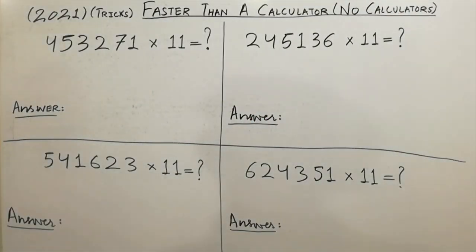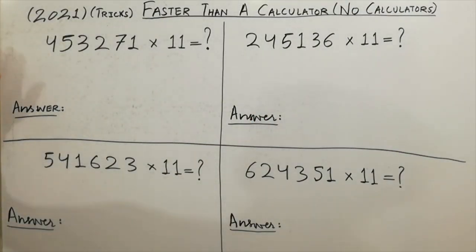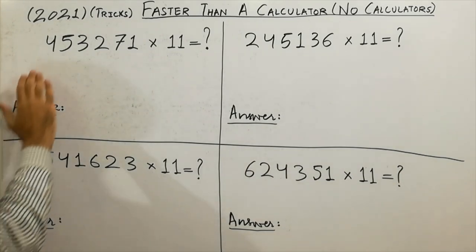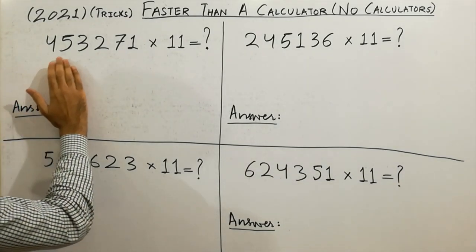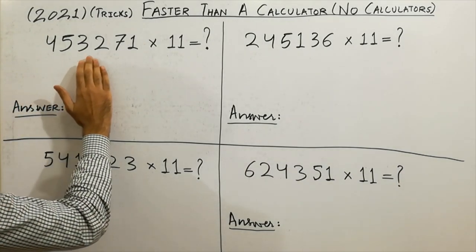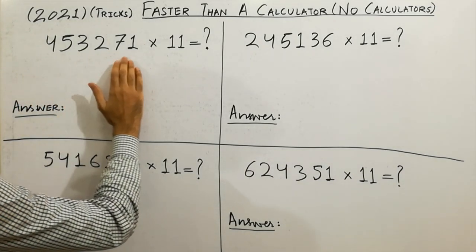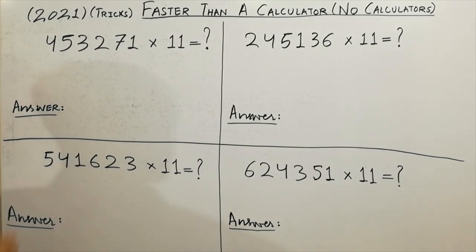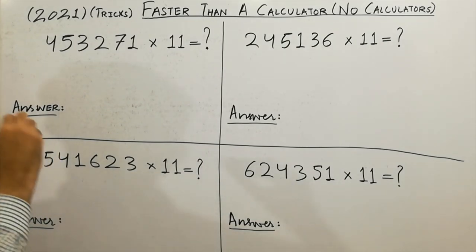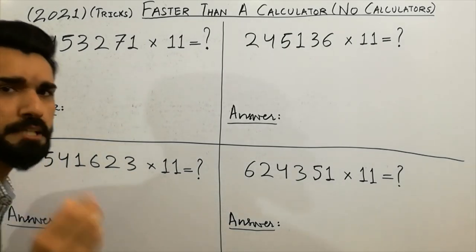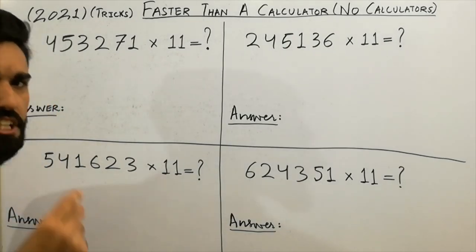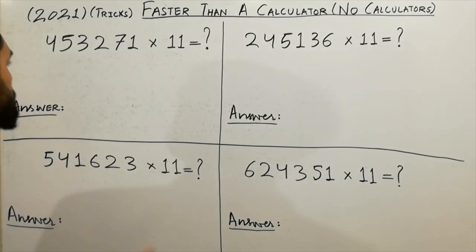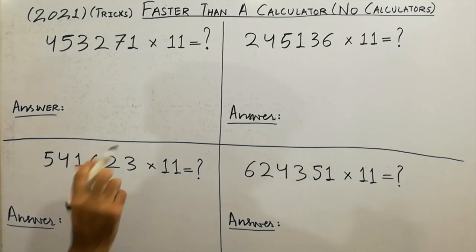Here, first of all, I am going to do this multiplication. The number given here is 4, 5, 3, 2, 7, 1 multiplied by 11. You can solve this in just a few seconds — in a short time, just like that.